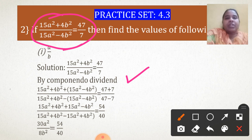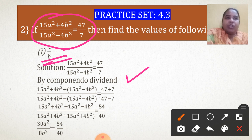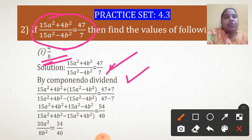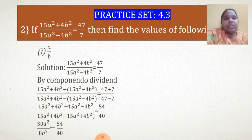Always this should be the first step when this ratio — A upon B, M upon N, or P upon Q — is asked from an equation. If the equation is given in this form and A upon B is asked, then always the first step is to use Componendo-Dividendo. This is a clue to remember.